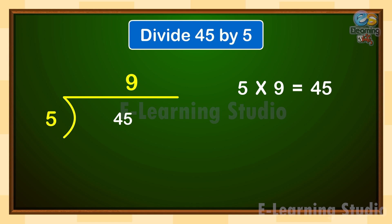Subtract 45 from 45 to get 0. So 45 divided by 5 is equal to 9.